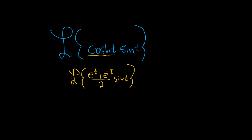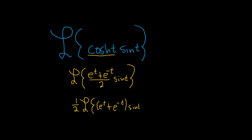So now we can keep going. This is the Laplace transform, and I'm going to go ahead and pull out the one-half just so it's out of the way. So this is one-half times the Laplace transform of e to the t plus e to the negative t, and then we still have the sine of t.